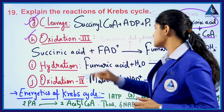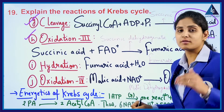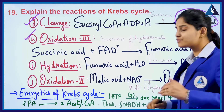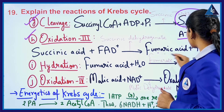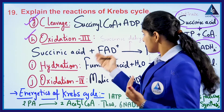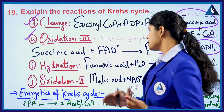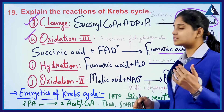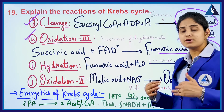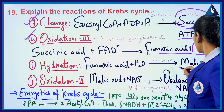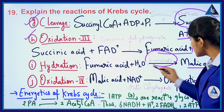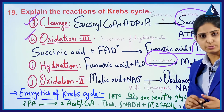Under oxidation 3, succinic acid along with FAD+ under succinate dehydrogenase helps the formation of fumaric acid and FADH2. Then in the hydration process, fumaric acid is converted into malic acid under the enzyme fumarase.